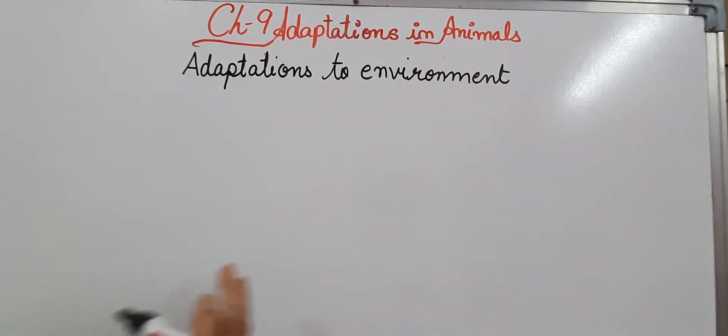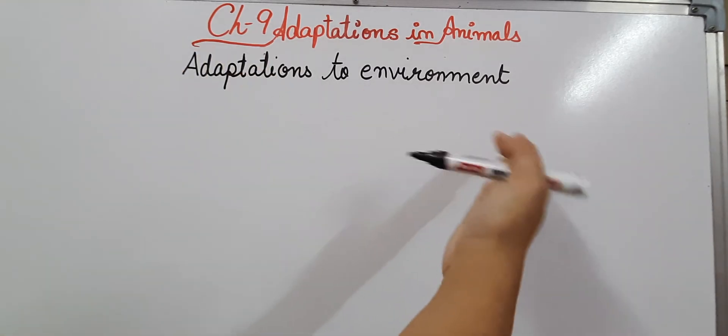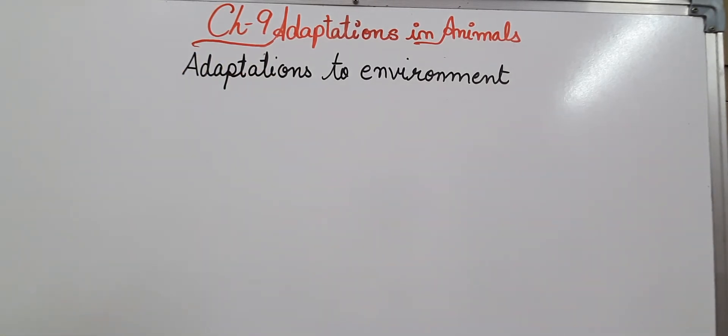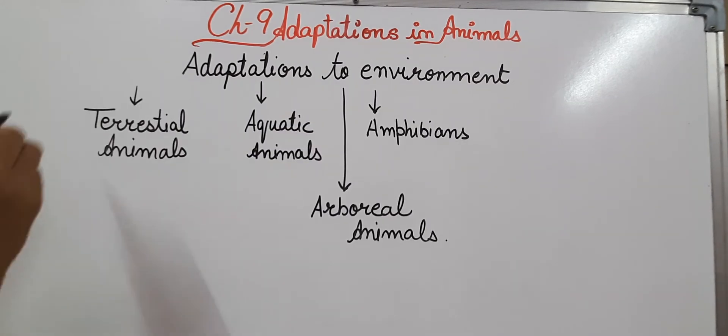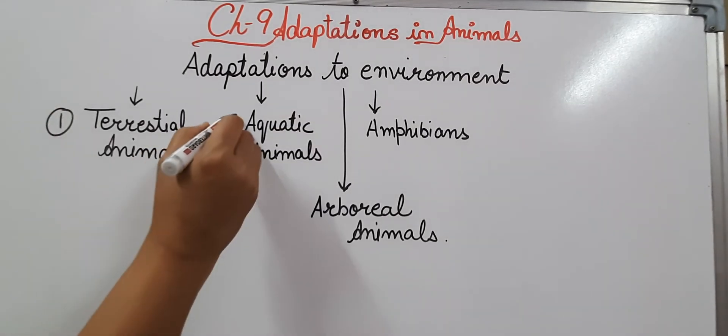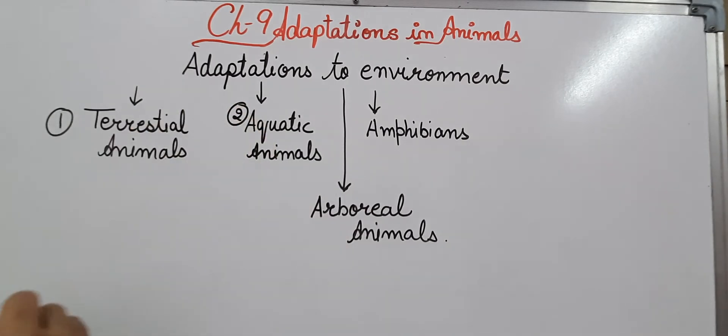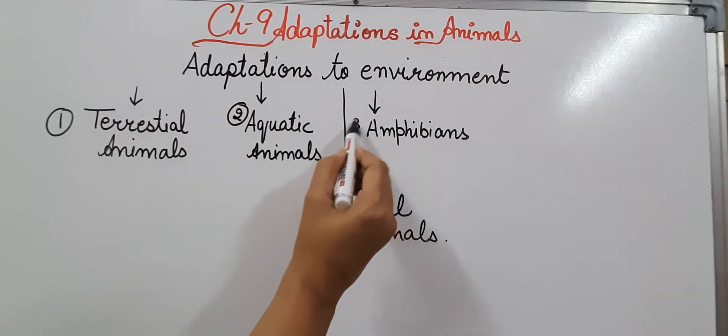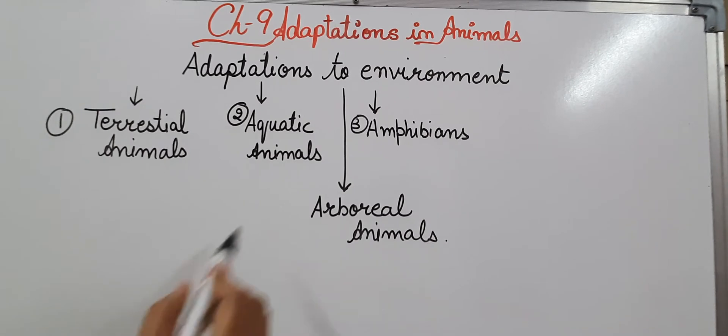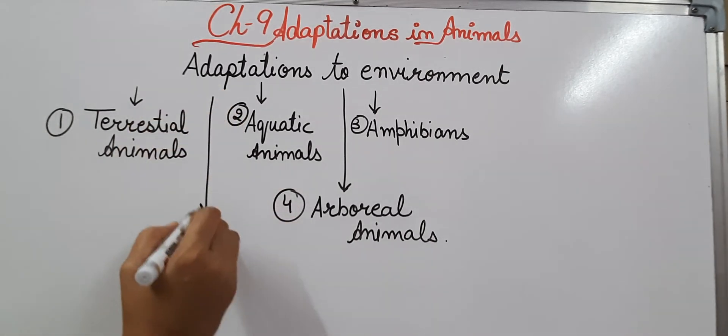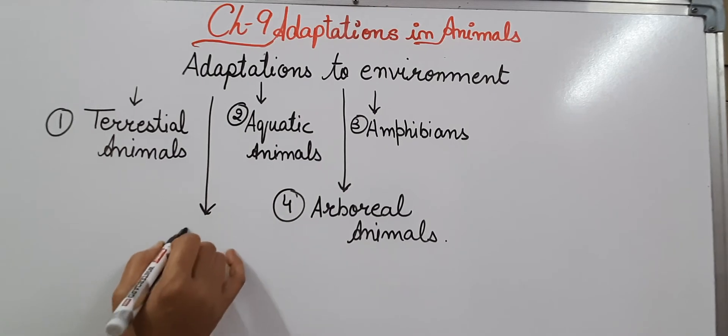They are: first, terrestrial animals; second, aquatic animals; third, amphibians; fourth, arboreal animals; and fifth are the aerial animals.